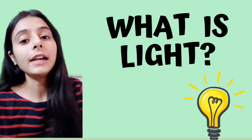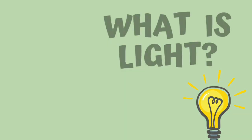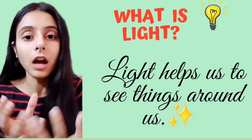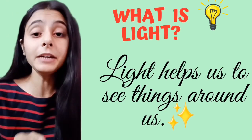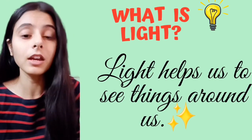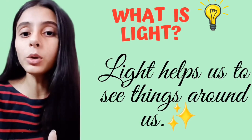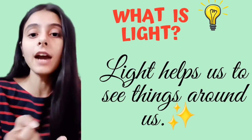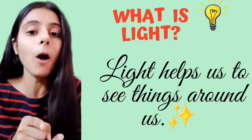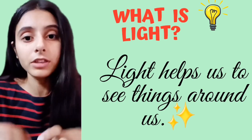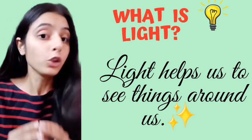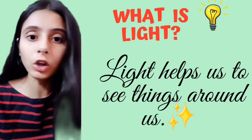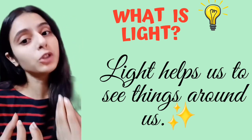So what is light? Light is something that helps us to see the things around us. It makes the things visible to us that are present around us. Means हमारे आस-पास जितने भी objects हैं, they are visible to us during the daytime — सुबह के टाइम पे वो visible होते हैं, क्यों? That is due to light.